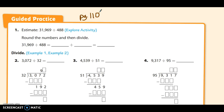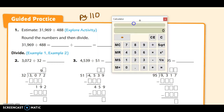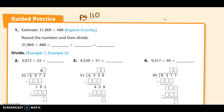Number one says: estimate 31,969 divided by 488. We could punch this into a calculator — 31,969 divided by 488 — and we know our answer is going to be about 65-something. So if we round 31,969, we could round that to 32,000.